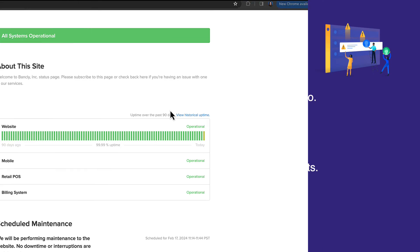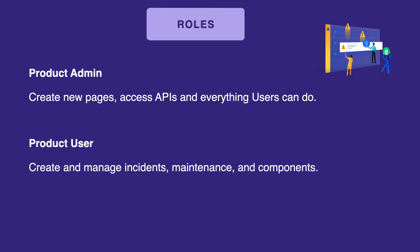Status Page has two levels of permission: Product Admin and Product Users. Everything I show you today, I am logged in as the Product Admin. Admins have the ability to configure, create new pages, manage things, and access APIs. Think of a user like an incident responder — they can create and manage incidents, maintenance, components, and things like that.